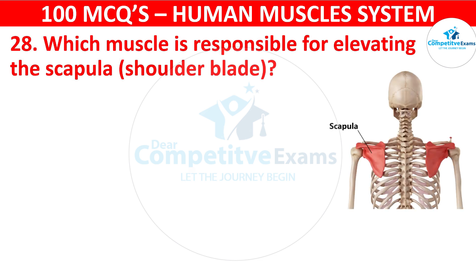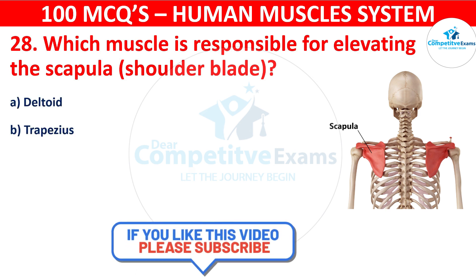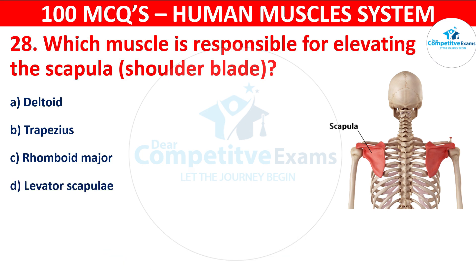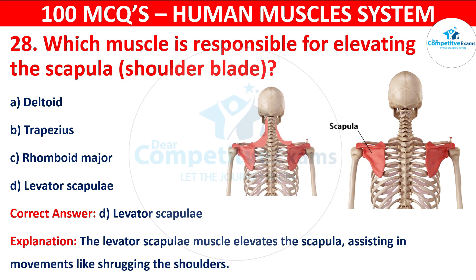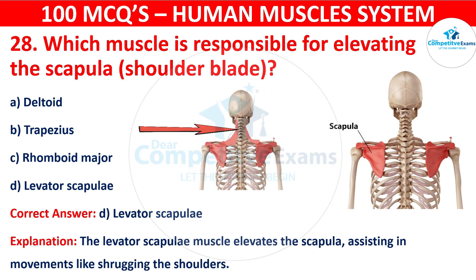Which muscle is responsible for elevating the scapula — the shoulder blade? Your options are Deltoid, Trapezius, Rhomboid major, or Levator scapulae. The correct answer is D, i.e. Levator scapulae. The levator scapulae muscle elevates the scapula, assisting in movements like shrugging the shoulders.